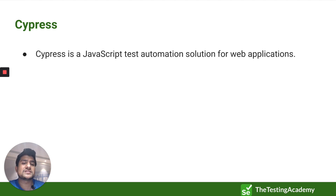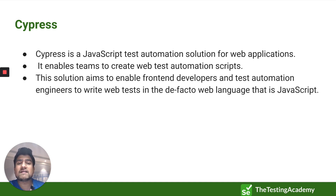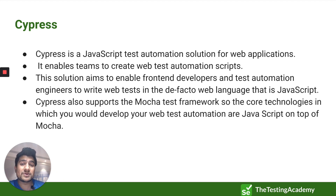Cypress is a JavaScript test automation solution especially for web applications. It supports JavaScript right now and can be used to create scripts. This framework is mostly available for front-end automation — whereas in Selenium you can do the same thing, the major point here is that Cypress only supports JavaScript as a programming language. Right now Cypress only supports the Mocha test framework, so if you've never worked with Mocha you might have a little bit of a hard time figuring it out.